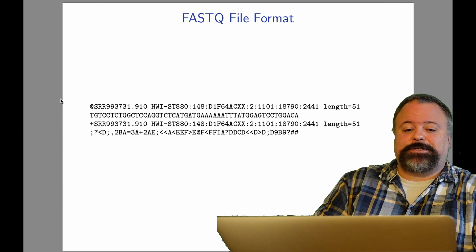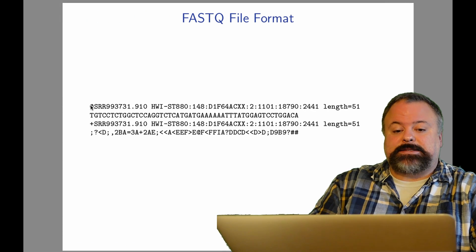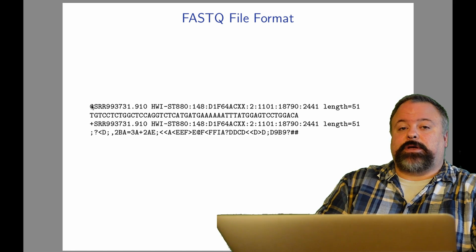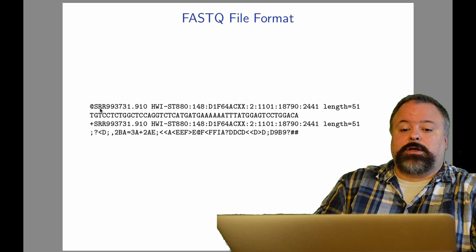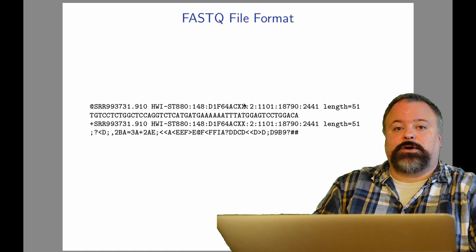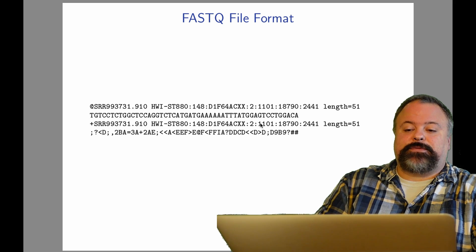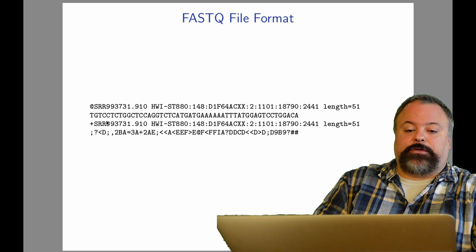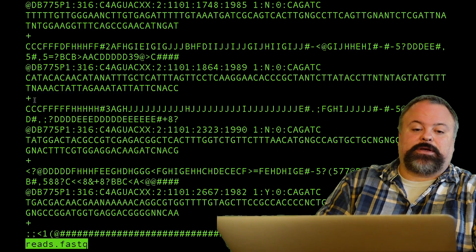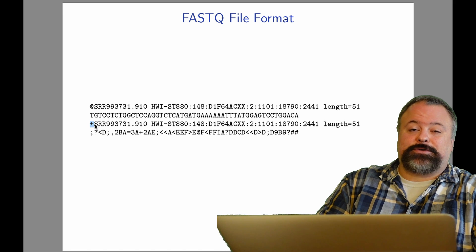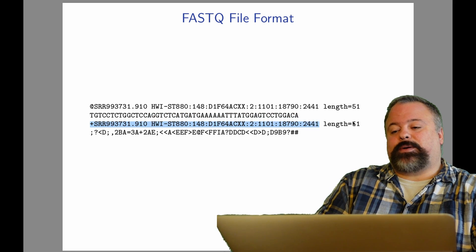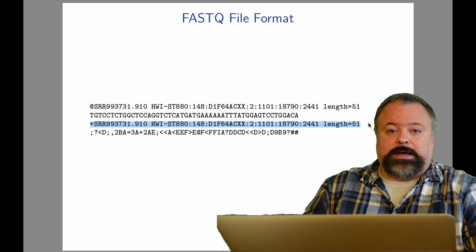Looking at this record in isolation: we have the at symbol, which is analogous to the greater-than sign in FastA files — it indicates the beginning of a new record. Then you have a unique identifier for that read, which often encodes information about the spot on the plate where the cluster of fragments were. Then you have the DNA sequence itself, followed by a replicate of the same ID. In many examples that's just a plus sign, which is all you need — and that reduces file space if you don't include the full ID again.